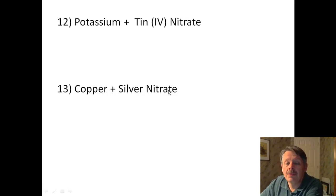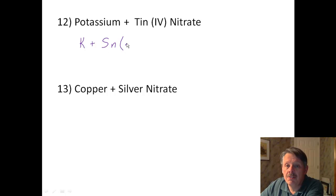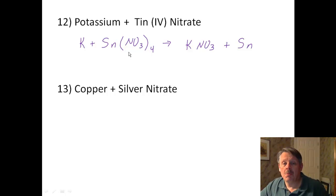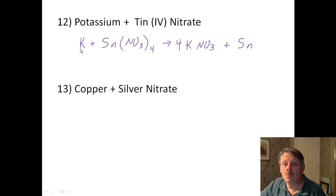Number 12: potassium and tin(IV) nitrate. Potassium is higher on the activity series than tin. Nitrate is NO₃ with a 1− charge, so I need 4 of them to offset tin(IV). Potassium bonds with nitrate because potassium is higher, leaving Sn all by itself. I have 4 nitrates on the left and only 1 on the right, so I put a coefficient of 4 in front of potassium nitrate, which means I need 4 potassiums, and I am now balanced.